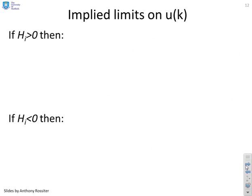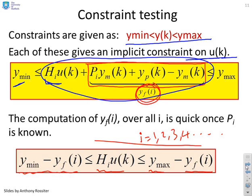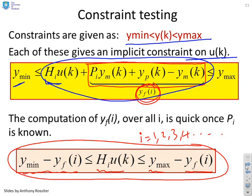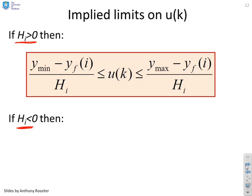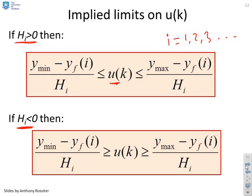There are two cases: H_i greater than 0 and H_i less than 0. The sign of H_i determines how the constraints can be satisfied with simple algebra. If H_i is greater than 0, rewrite as: (Y_min minus YF(i)) / H_i ≤ U(k) ≤ (Y_max minus YF(i)) / H_i, for i equals 1, 2, 3, and so on. If H_i is less than 0, dividing reverses the inequality, yielding a change in sign. Each output prediction therefore leads to two additional constraints on the current value of the input.